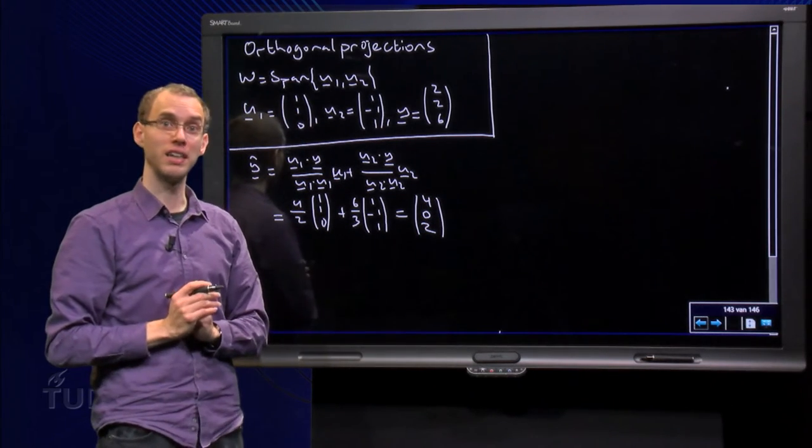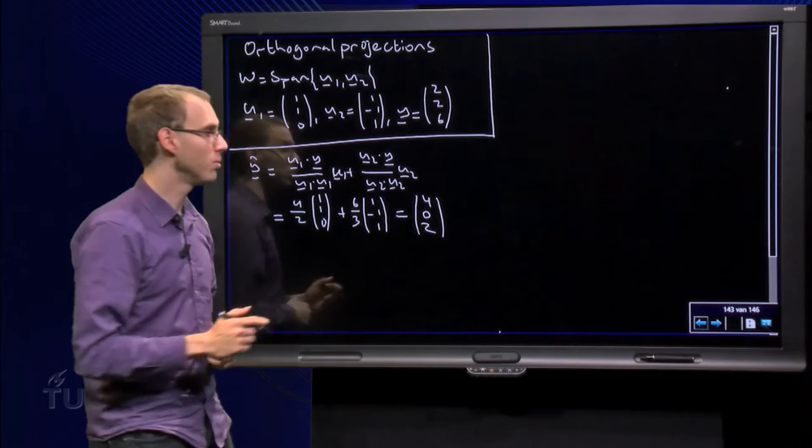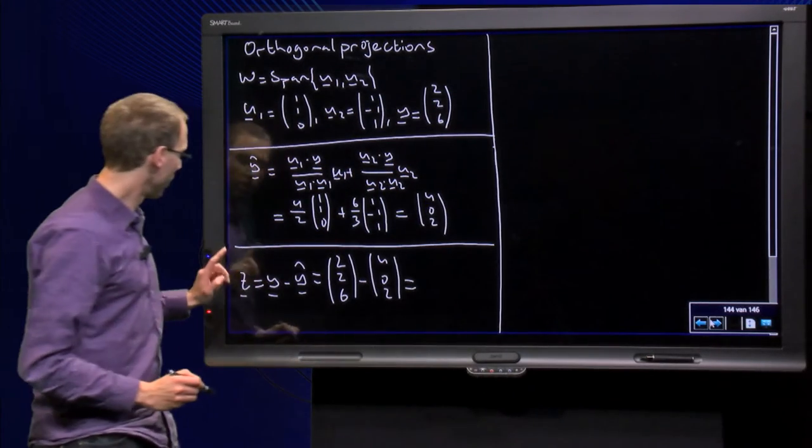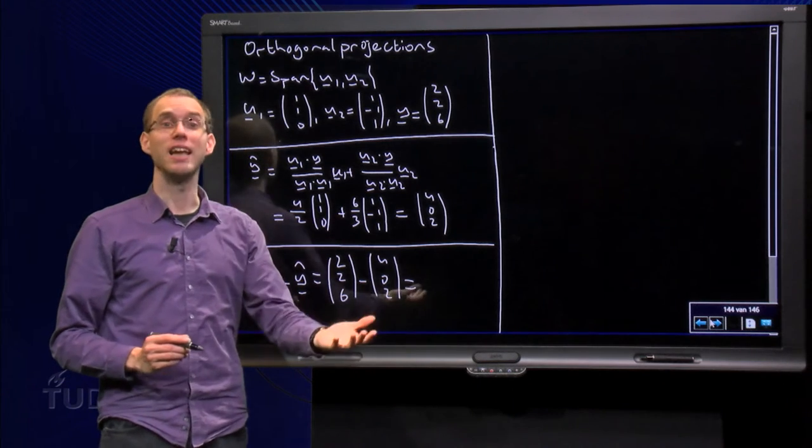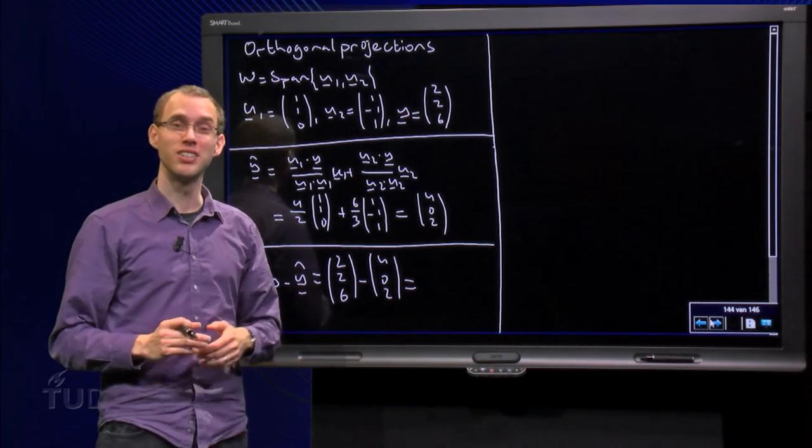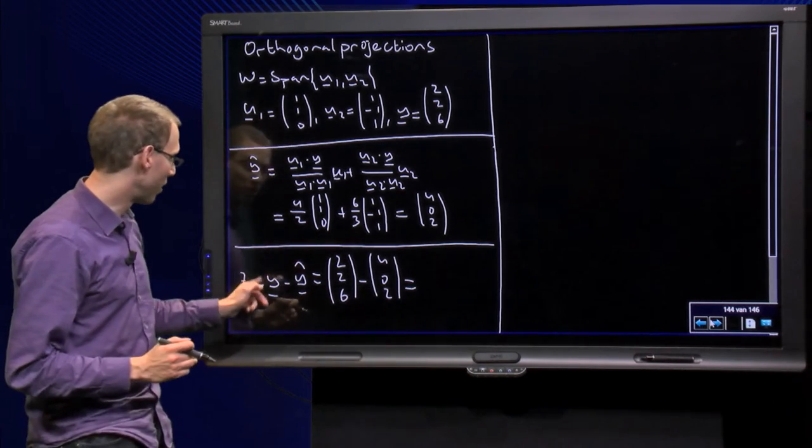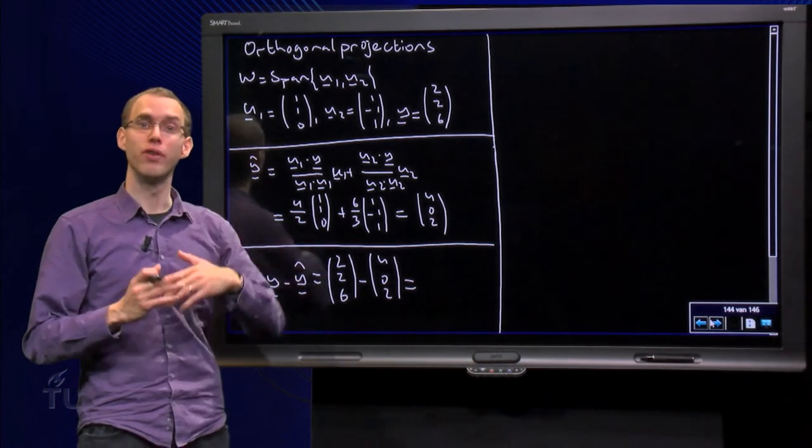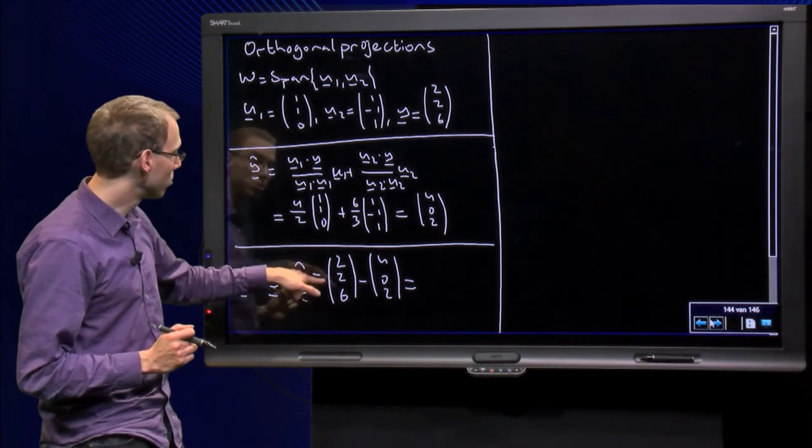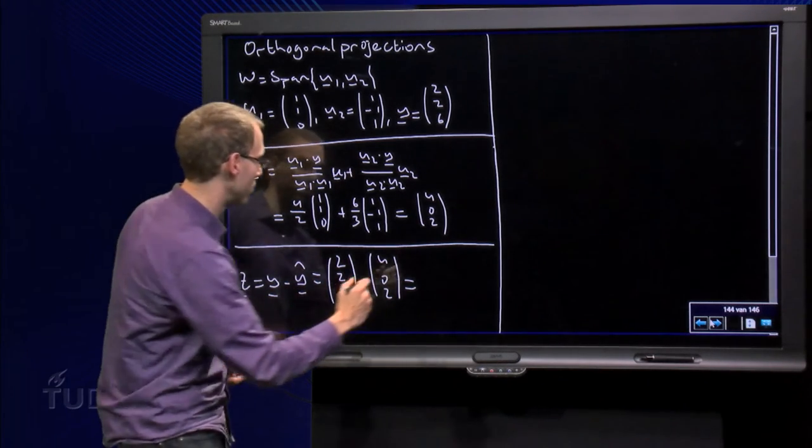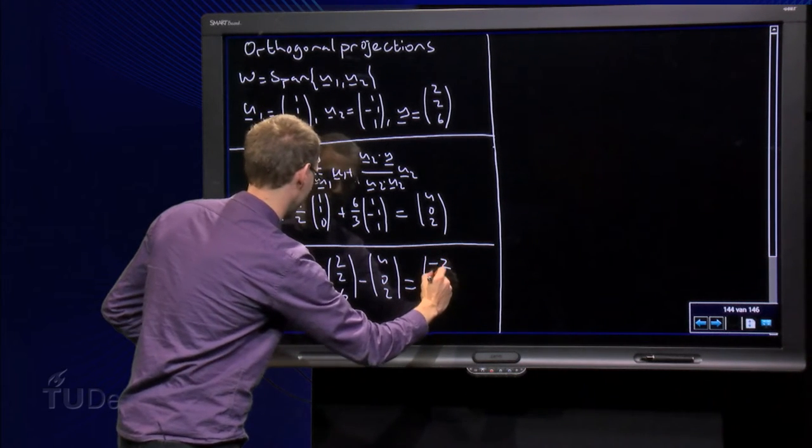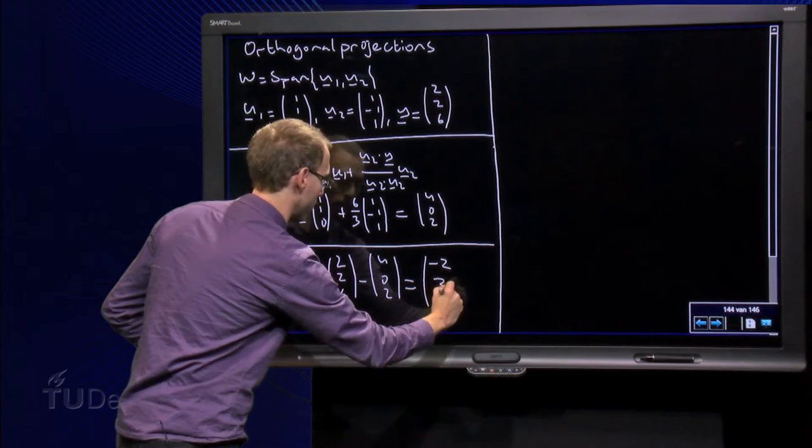So there we have our y-hat. Now let's find z. We know y equals y-hat plus z, so that means z equals y minus y-hat. We have already computed y-hat, we know y, so we get [2, 2, 6] minus [4, 0, 2], which yields [-2, 2, 4].